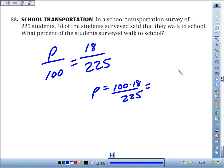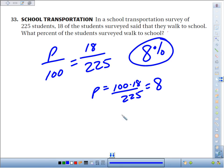100 times 18 divided by 225. I think I divided by 25 before. 225 gives us 8. So 8% of students said they walked to school.